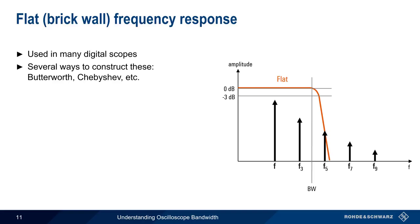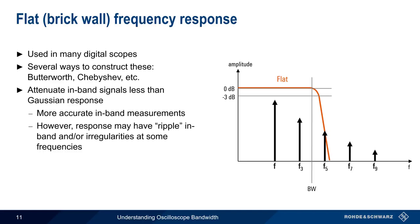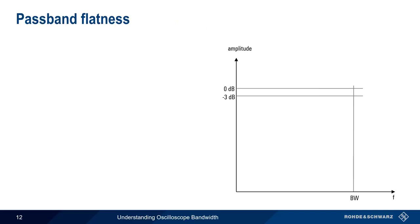Many digital oscilloscopes have a so-called flat or brick wall frequency response. There are several different ways to create this type of frequency response — for example, using filters with Butterworth or Chebyshev responses. Regardless of the implementation, scopes with a flat frequency response usually attenuate in-band signals less than those with a Gaussian response. In other words, there's very little attenuation until the 3 dB point is reached, after which amplitude falls off rather quickly. One advantage of this type of response is that it provides more accurate in-band amplitude measurements. However, note that the filter type may create some ripple in the pass band and/or irregularities at some frequencies. Another advantage of a flat frequency response is that it reduces the amount of out-of-band noise compared to a Gaussian response.